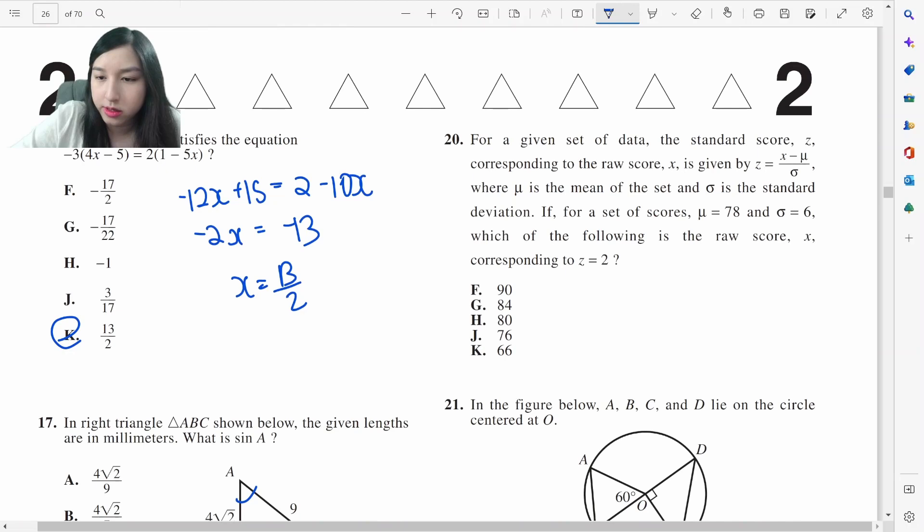We want to find the raw score. This is basically z-score formula. So when z is 2, they want you to find x. x minus the mean, which is 78, divided by standard deviation, which is 6. Cross multiply, 12 equals x minus 78. x is going to be 90.